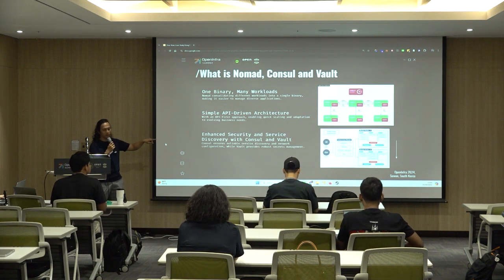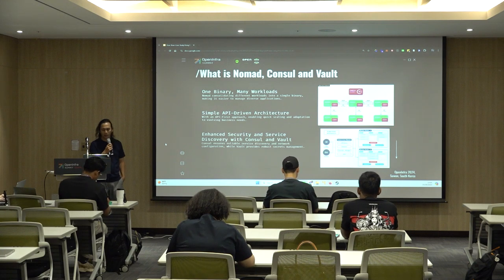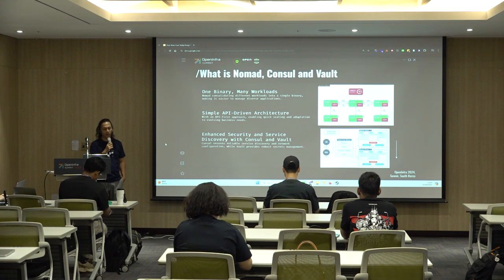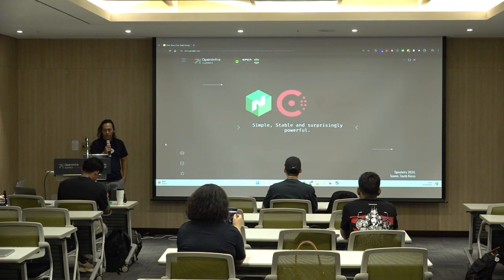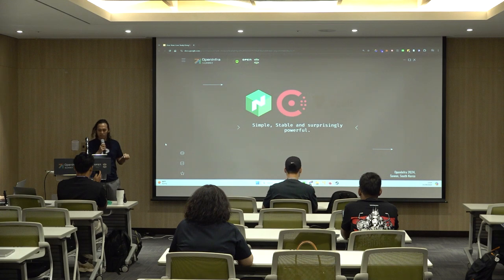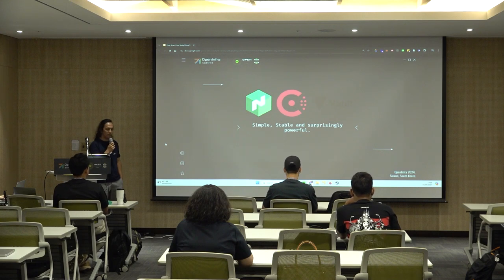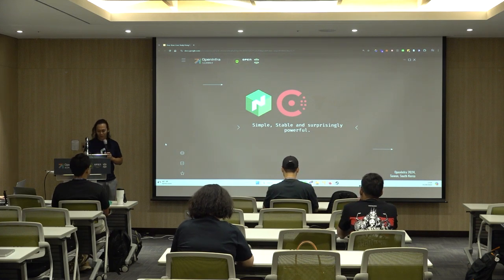While Kubernetes is much more popular, Nomad offers a simpler and more streamlined approach — it uses only a single binary to handle the Nomad client and server. What really sets it apart is the architecture. Unlike Kubernetes, which has a lot of controllers managing everything, Nomad takes a simpler approach driven by a straightforward API and HCL deployment configuration, making it much easier to understand and manage. When you pair Nomad with Consul and Vault, you get seamless service discovery and security that just works.